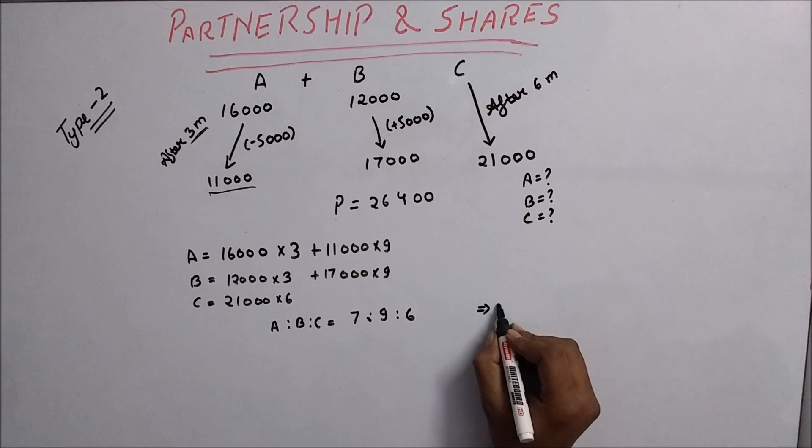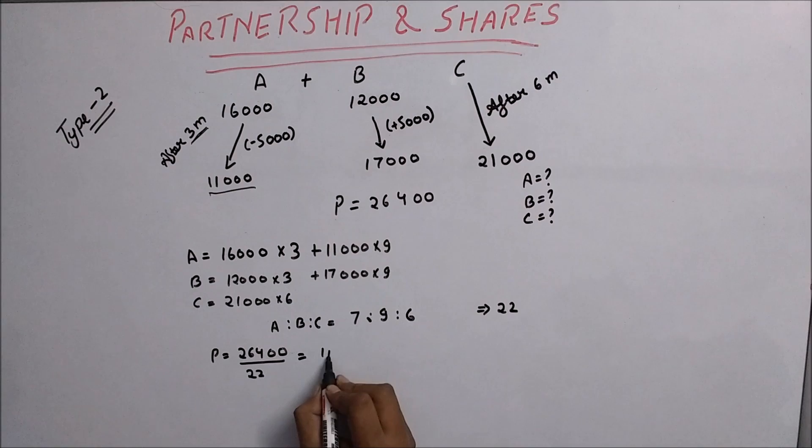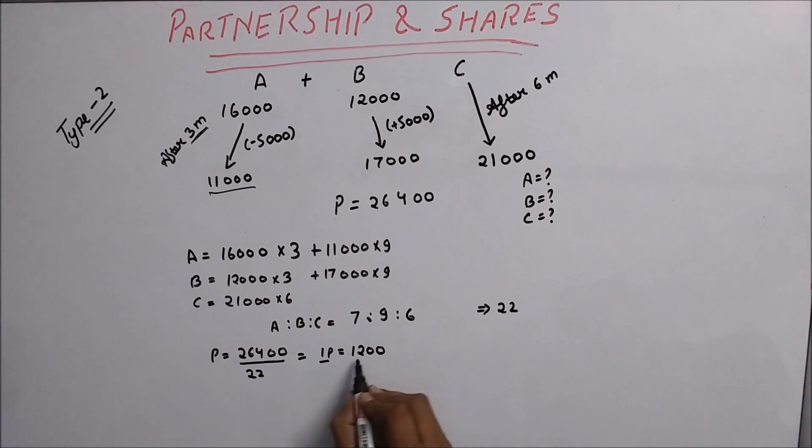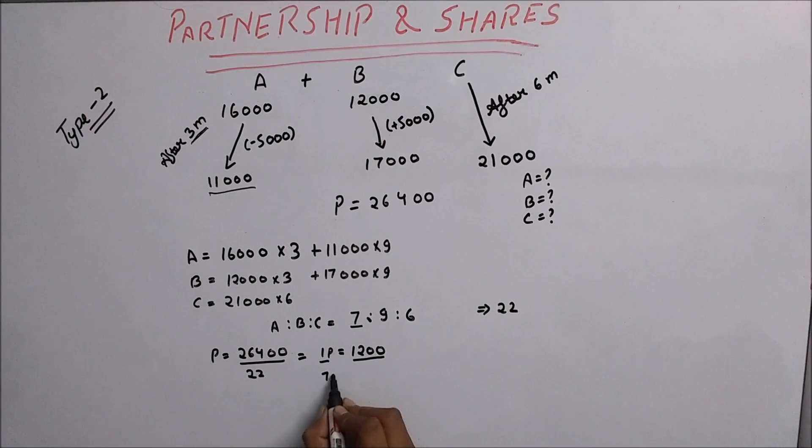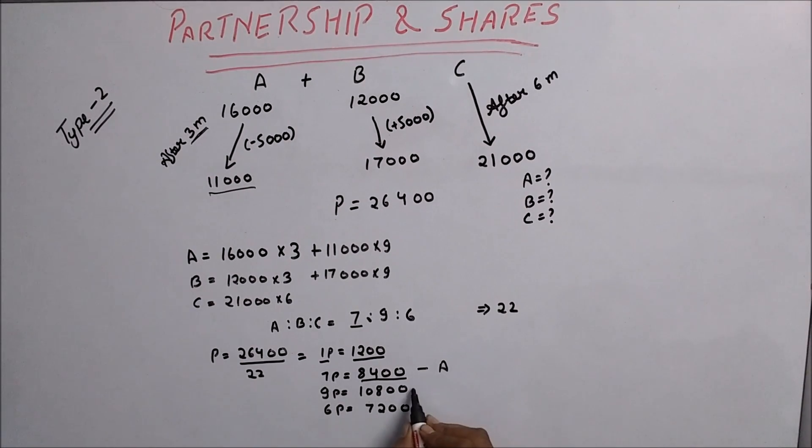After calculating, we see that A ratio B ratio C will be 7 ratio 9 ratio 6. Now we add all of these which equals 22. We divide 26,400 by 22 to get one part equals 1,200. So 7 parts equals 8,400 (share of A), 9 parts equals 10,800 (share of B), and 6 parts equals 7,200 (share of C).